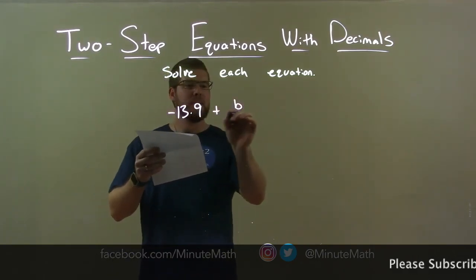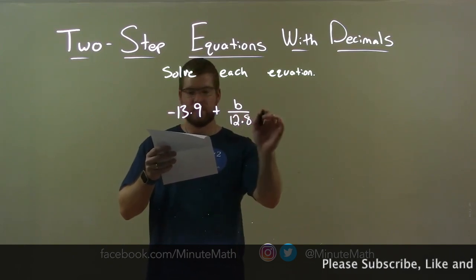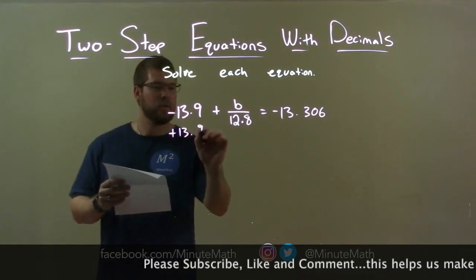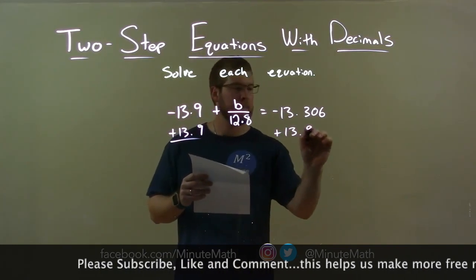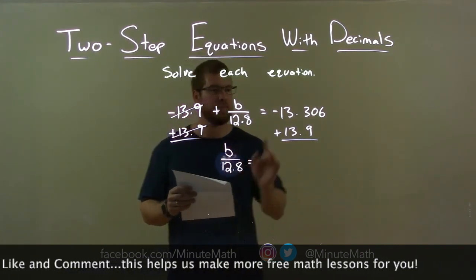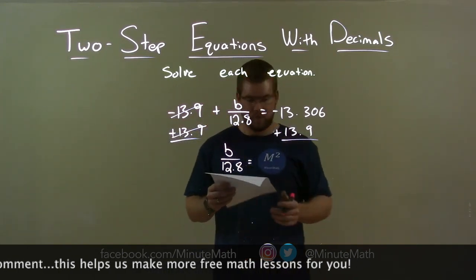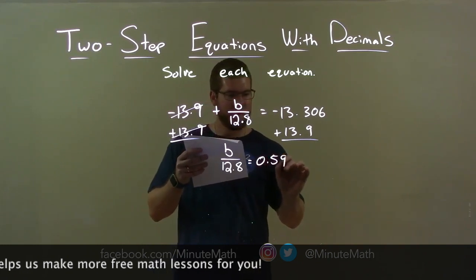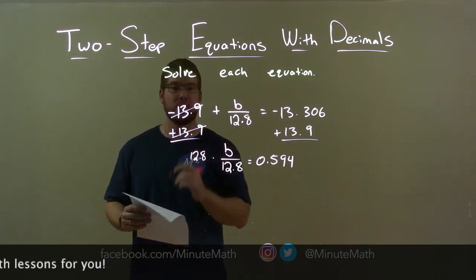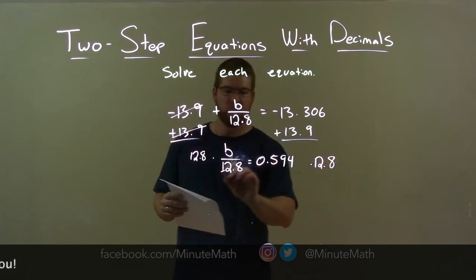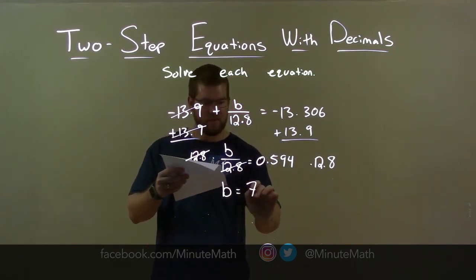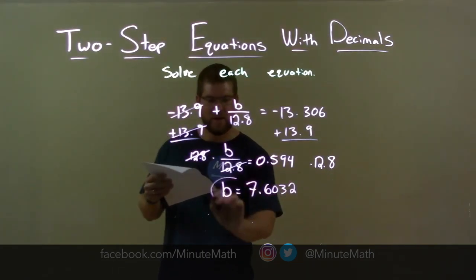Negative 13.9 plus b over 12.8 equals negative 13.306. First thing I want to do is add 13.9 to both sides. That eliminates the negative 13.9 on the left, giving me b over 12.8 by itself. On the right, negative 13.306 plus 13.9 is 0.594. Now I'm dividing by 12.8 — multiplication is the opposite of division — so I multiply 12.8 to both sides. The 12.8 is eliminated on the left, giving me b by itself. 0.594 times 12.8 is 7.6032. And that is our final answer.